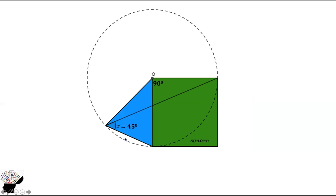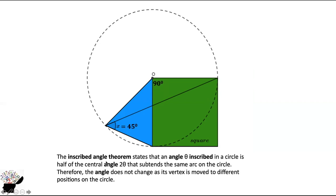Why? Because from here, we know the angle. This one is an inscribed angle. And in the inscribed angle theorem, it states that an angle theta inscribed in a circle is half the central angle 2 theta that sustains the same arc on the circle.